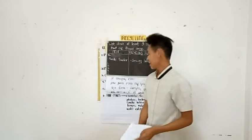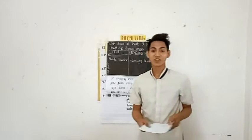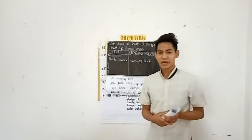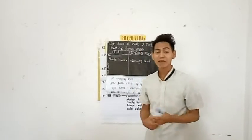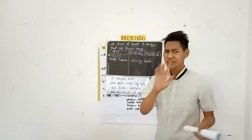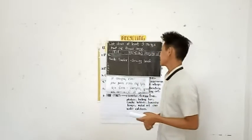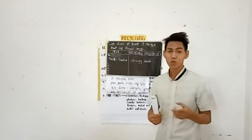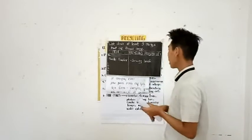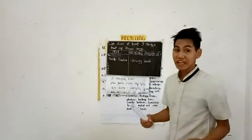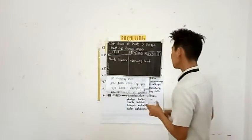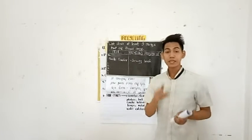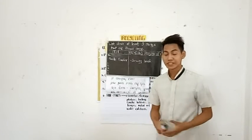This is Teacher Ken, and today we will talk about recycling. But before that, let us have some further activity. Let's list at least five things that are thrown away. For example, plastic — recycling possibility. You will be given five minutes to finish your task.